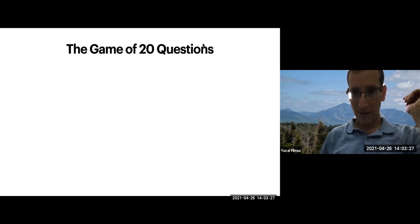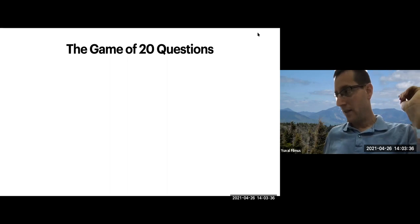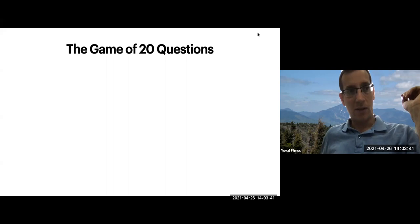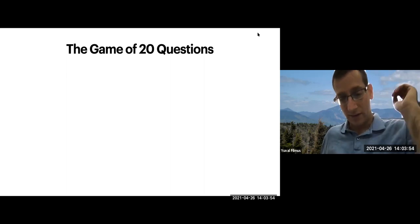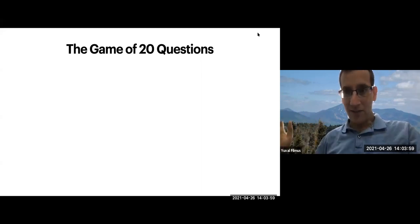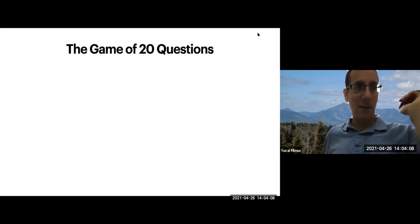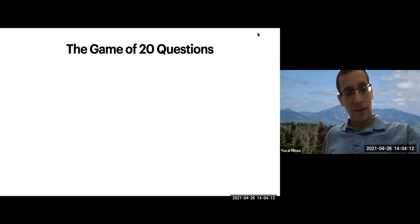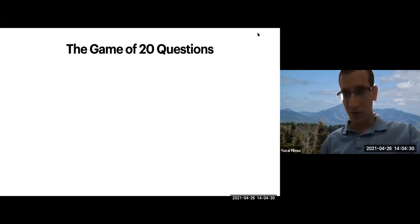So what is the game of 20 questions? This is a parlor game, a party game. Let's say I'm playing with Ilan. I'm thinking of an object, and Ilan's goal is to discover this object - it's a cooperative game. Ilan can ask me yes/no questions, and using these questions he's supposed to figure out what object I'm thinking about. I have to answer truthfully, but there's no cheating. What is the threshold number of objects I can think of for Ilan to win with a perfect strategy?